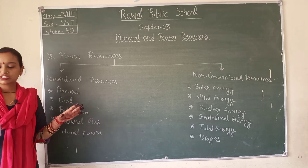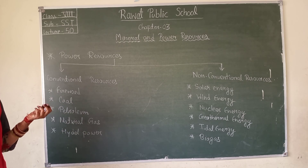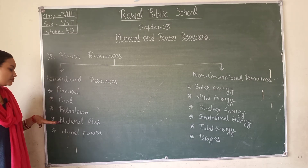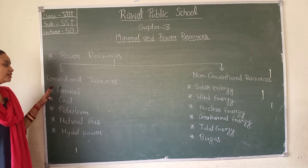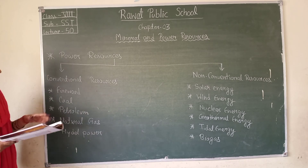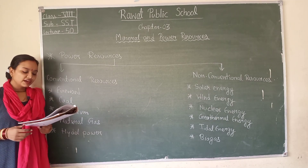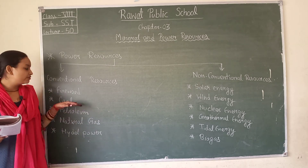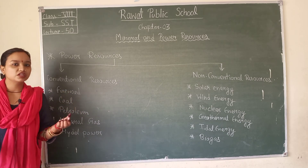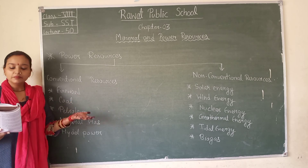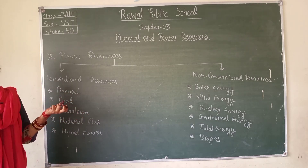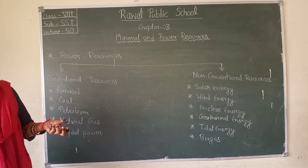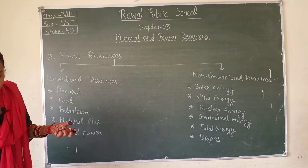Conventional sources of energy are those which have been in common use for a long time. Firewood and fossil fuels are the two main conventional energy resources. Firewood is used for cooking and heating. In a country, more than 50% of energy is used by villages. Remains of plants and animals buried under the earth for millions of years got converted by heat and pressure into fossil fuels such as coal, petroleum, and natural gas.